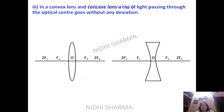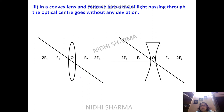Rule number three applies to both convex and concave lenses: if a ray passes through the optical center, it gets no deviation at all. It will not change its path and passes through the optical center undeviated.